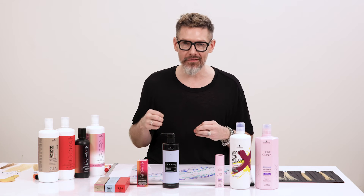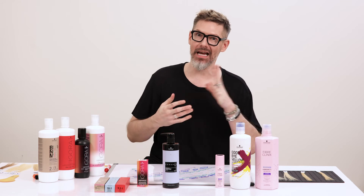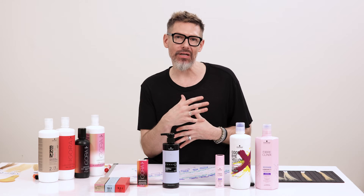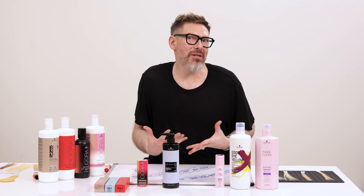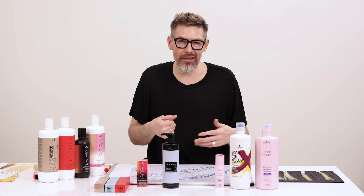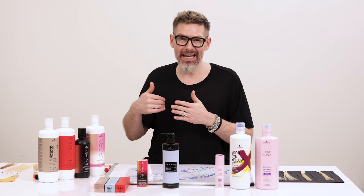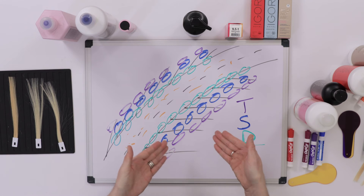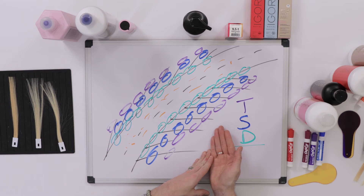Now all of this wildly depends on how porous your client's hair is or how many times it's been bleached. What we're giving you are kind of by-the-book things to expect or look out for. But by the book: a temporary would last the least, semi-longer, demi-longer, and you can see that is directly related to what kind of pigments they have and where they live in or on the hair surface.